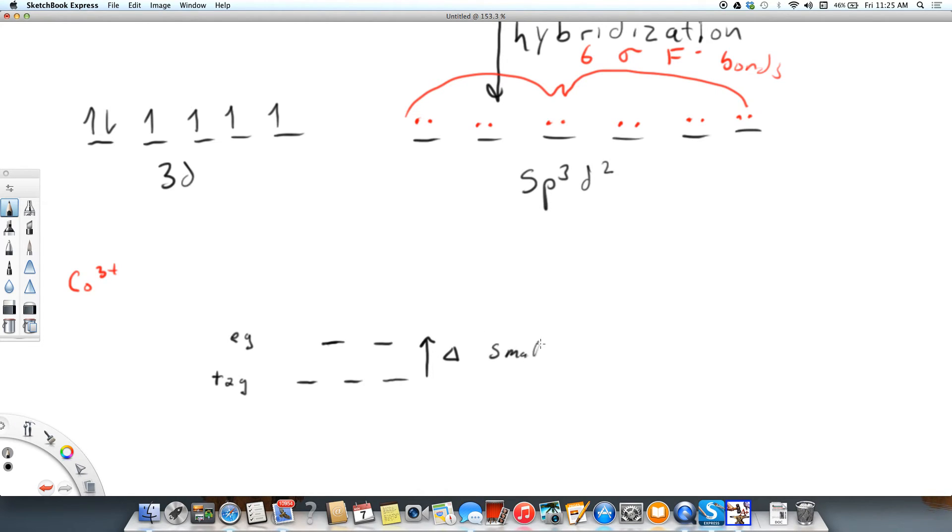This is a small energy or a small split because of a weak field ligand. That means there's not going to be a big difference between the energy of the eg and t2g. If there was a very large difference, these two electrons would be forced to pair up with these.